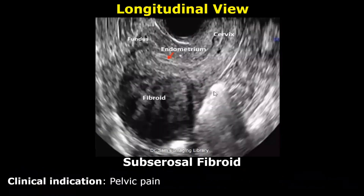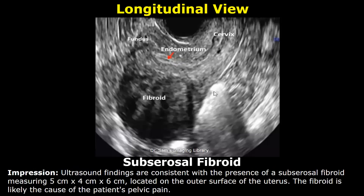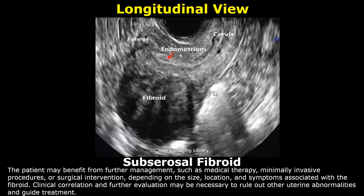This is a report for subserosal fibroid. The clinical indication is pelvic pain. In the findings, you must write: 'A well-defined hypoechoic lesion located on the outer surface of the uterus, suggestive of a subserosal fibroid.' In the impression, you can mention the subserosal fibroid and its size, followed by its location. In the end, write about the patient's history, further management, and clinical correlation.